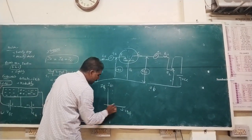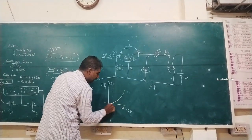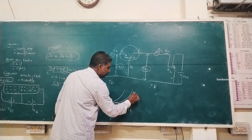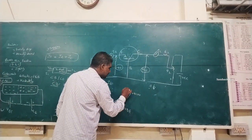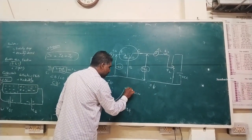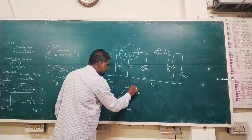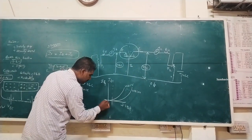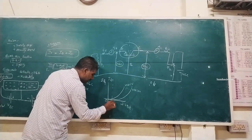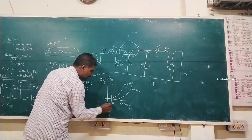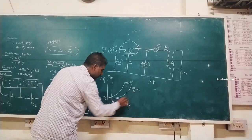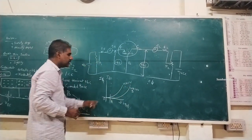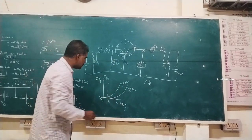A graph is obtained with VCB equal to zero and VCB equal to one volt. From 0 to A on the graph, it does not obey Ohm's law, whereas from A to B it is linear and obeys Ohm's law.